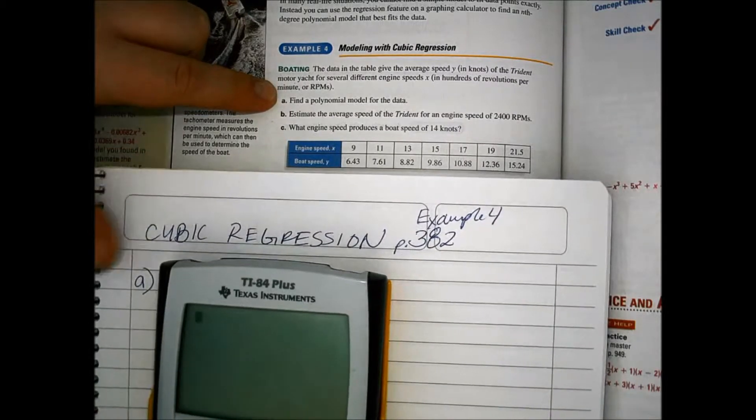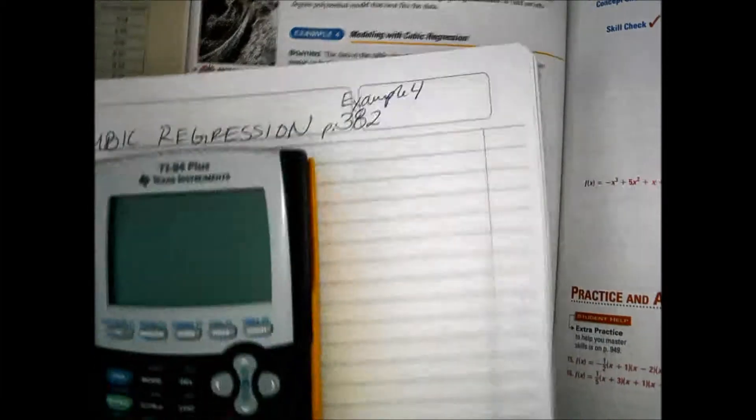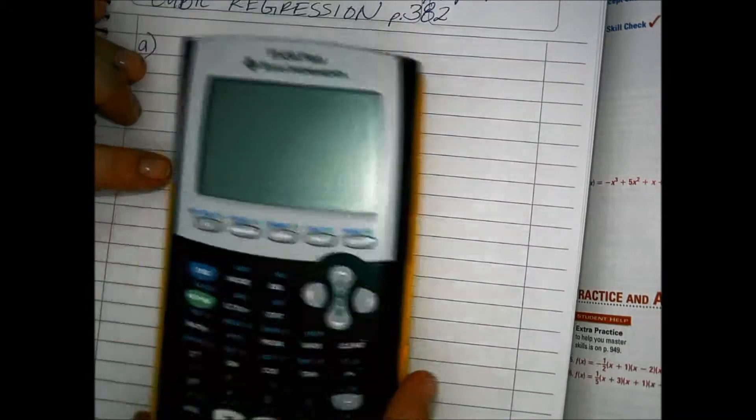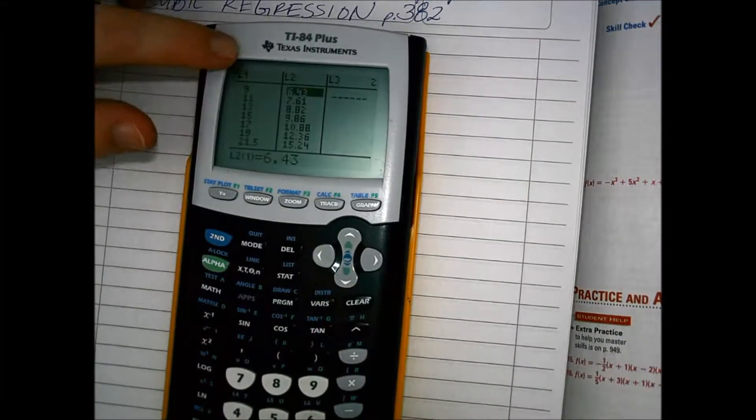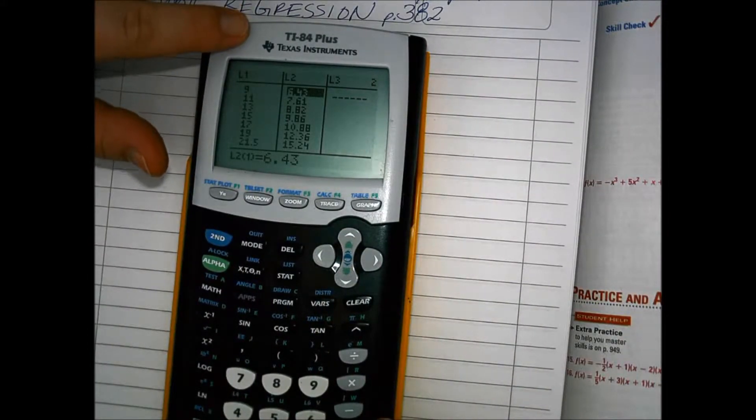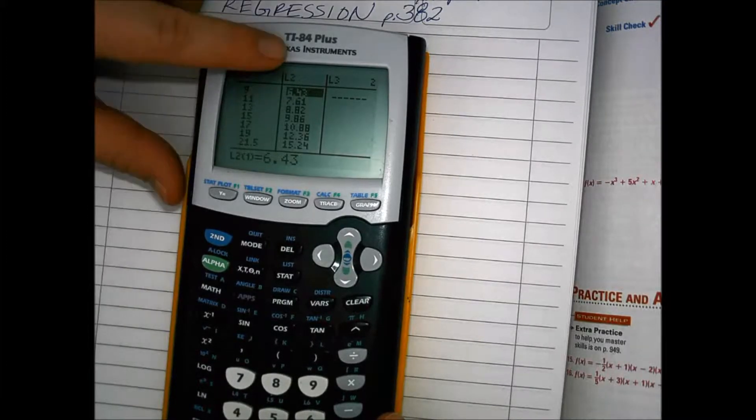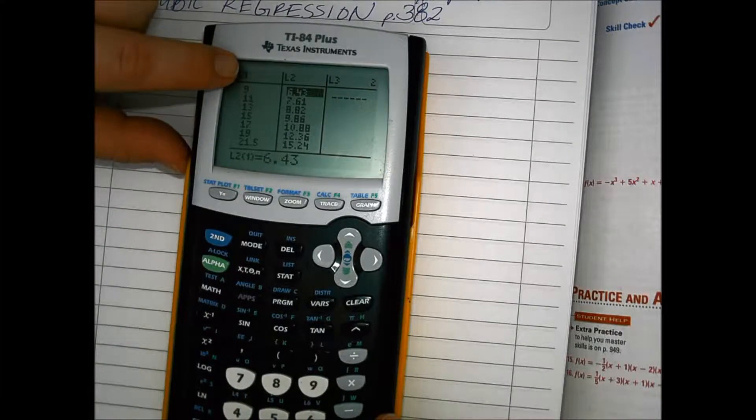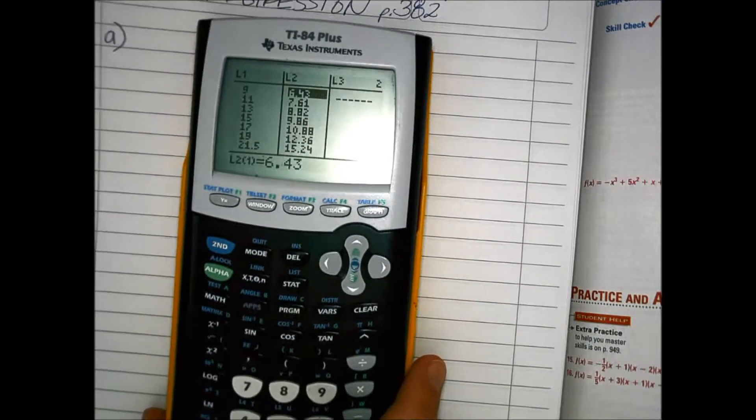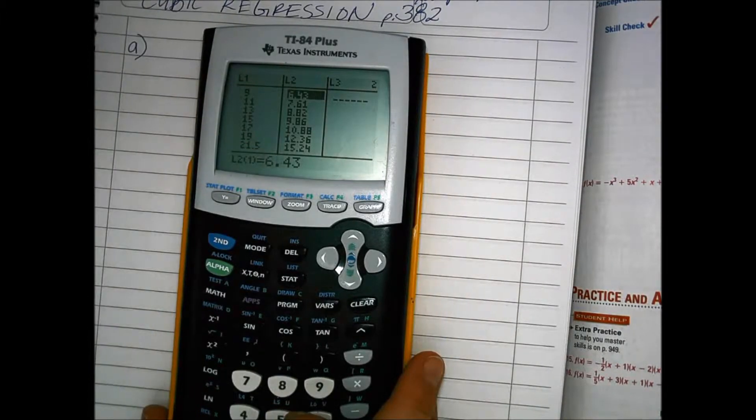So let's use the calculator and put in this data. I've already put that in just to save some time. And so when we hit stat and then edit, you'll see that we have all of the x values in for L1 and the y values in for L2. So we have the engine speeds x, boat speeds y.